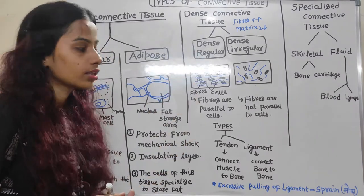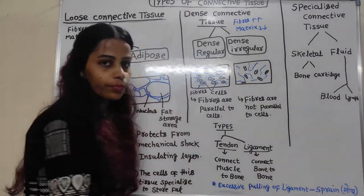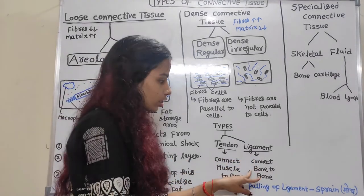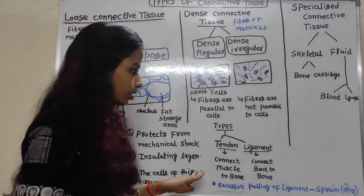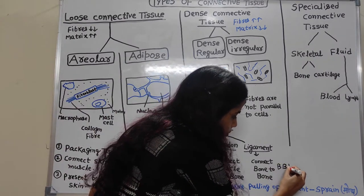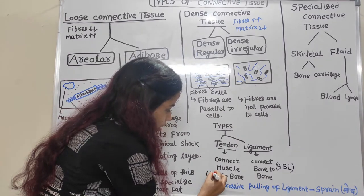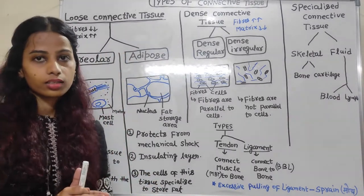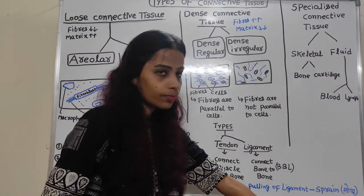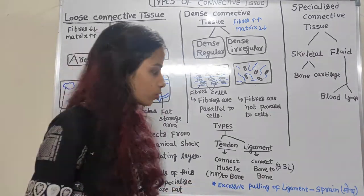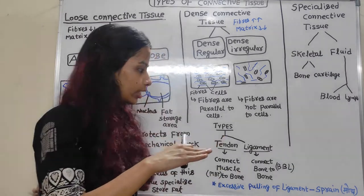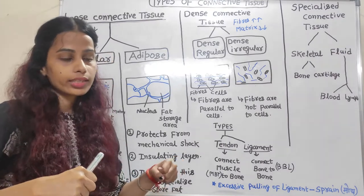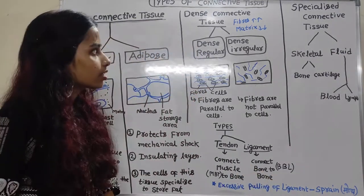Dense regular connective tissue is divided into tendon and ligament. Tendon is a joint which connects muscle to bone, and ligament is a joint which connects bone to bone. We can remember this by the trick: BBL — bone to bone ligament, and MBT — muscle to bone tendon. A sprain is excessive pulling of ligament. Excessive pulling of the bone-to-bone connection causes what we call a sprain.